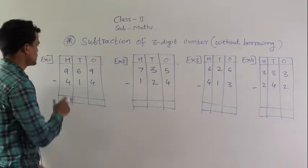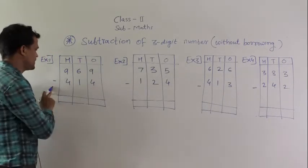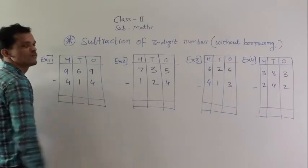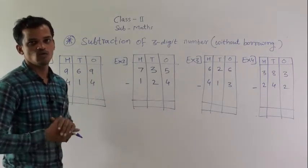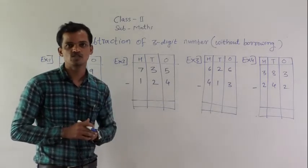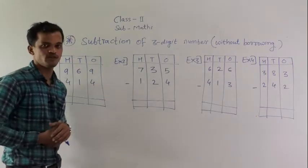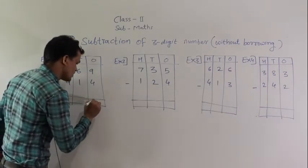See the first example: 969 minus 414. Start from 1's place. We solve subtraction of 2-digit numbers without borrowing like this. Only subtract the values. So, 9 minus 4, 5.